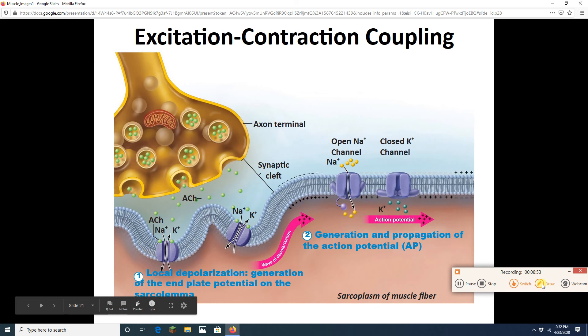So acetylcholine, short story here, acetylcholine causes an action potential in the muscle cell. And that action potential speeds along the muscle cell's plasma membrane.